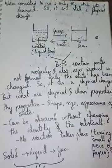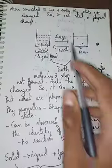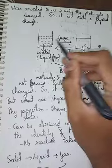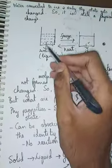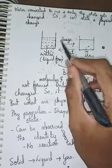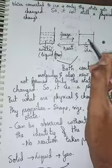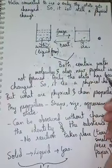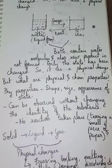No new product is formed — even if you freeze water and it becomes ice, it is still water. In both cases, water molecules are only present, nothing else. That is why we say both contain water molecules and no new product is formed. Only the state has been changed, no reaction has taken place. That is why we call this a physical change.